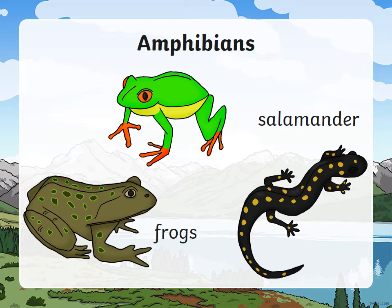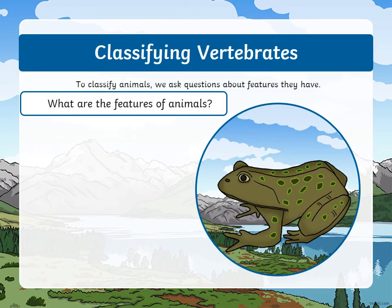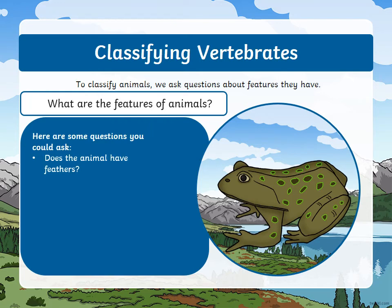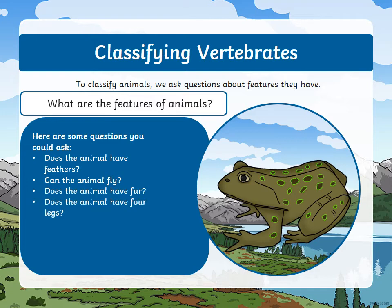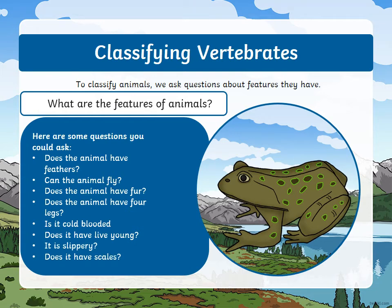The next group of vertebrates will be the amphibians. Here we have the frogs and the salamanders, and there are other amphibians. Let's classify the frog. Does it have feathers? No. Can it fly? No. Does it have fur? No. Does the animal have four legs? Yes. Is it cold-blooded? Maybe. Does it have live young? Yes. Is it slippery? Yes. Does it have scales? No.